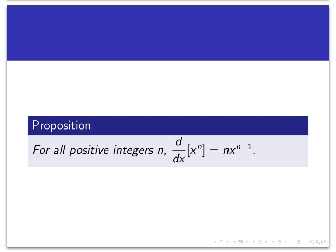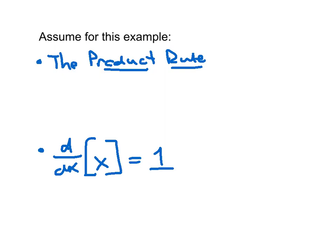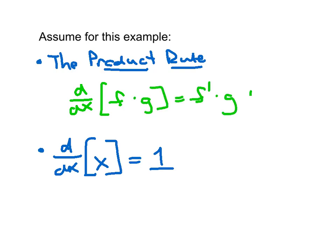To get this proof going, we're going to assume a couple of items of calculus knowledge. First of all, we're going to assume the product rule works. The product rule is a rule for differentiating products of functions — it says that the derivative of two functions multiplied together, say f and g, would be the derivative of f times g plus f times the derivative of g. Now you might be thinking it's kind of weird to assume the product rule works if we're going to prove the power rule.